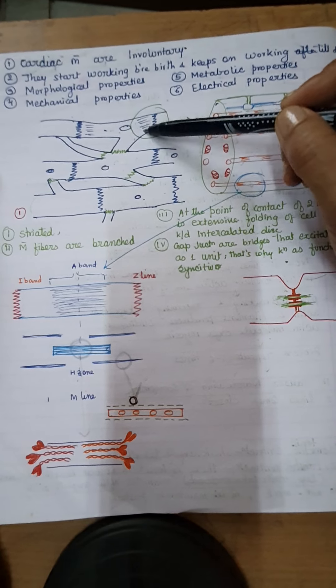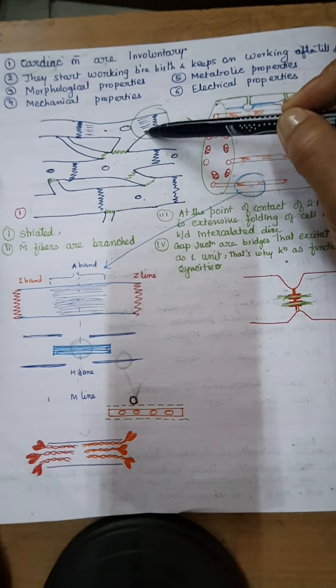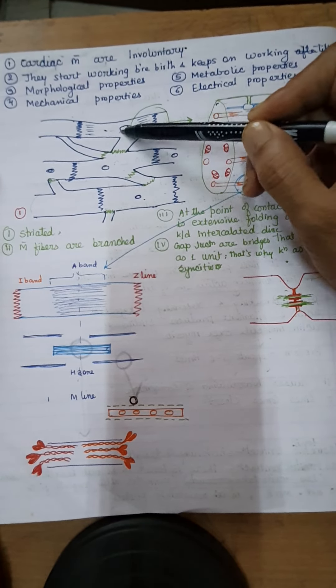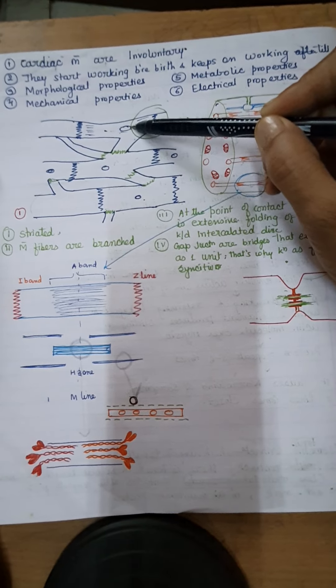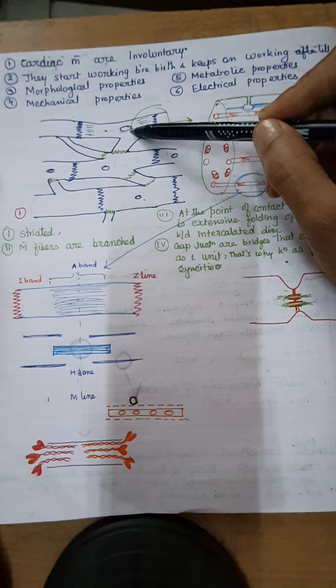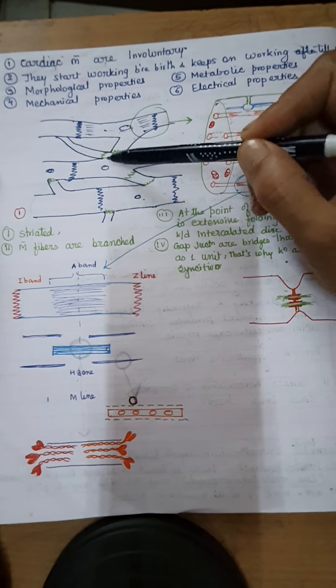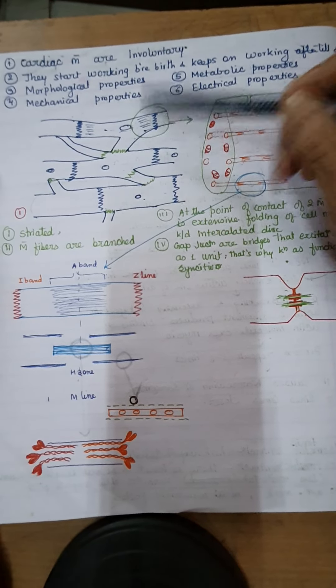The next morphological property of cardiac muscle is the nucleus. They have one nucleus, and this nucleus is placed in the center of the muscle cell. So this is another property of the cardiac muscle.